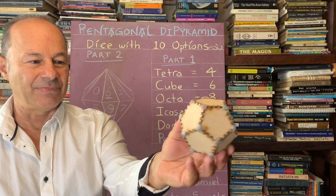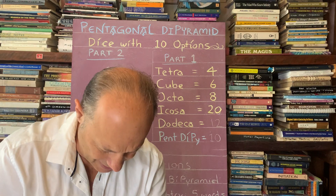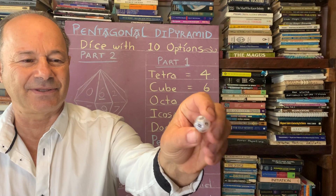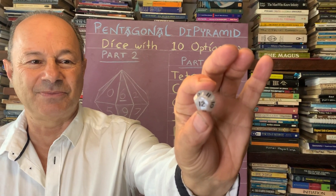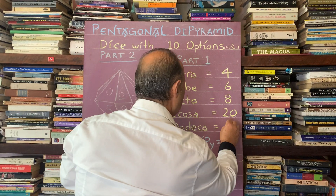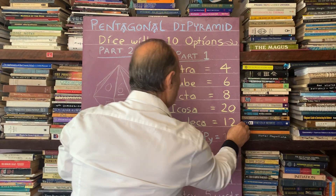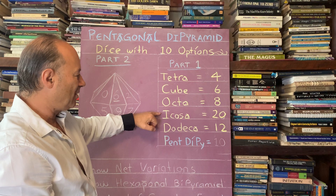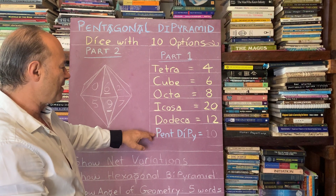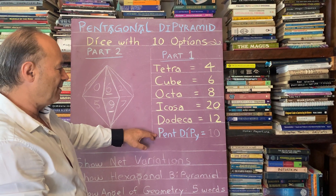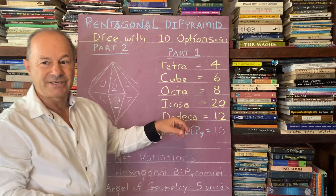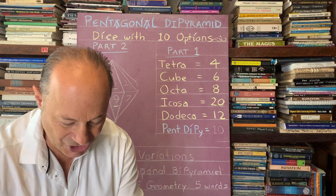The shape with pentagonal faces is the dodecahedron — it has 12 pentagon faces, giving 12 possible combinations as a die. If we pull off a pentagonal face from the icosahedron, we can come up with another possibility: a die with 10 faces, useful if you have 10 people and need 10 choices.